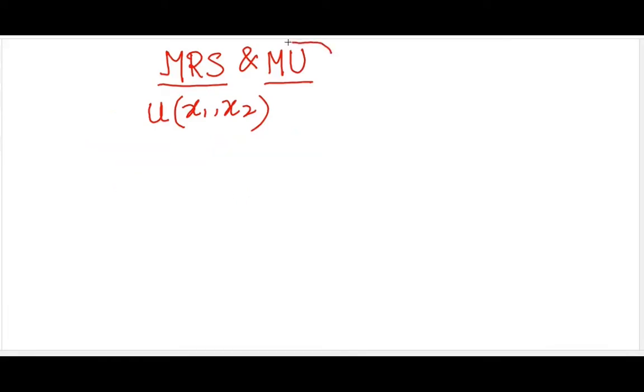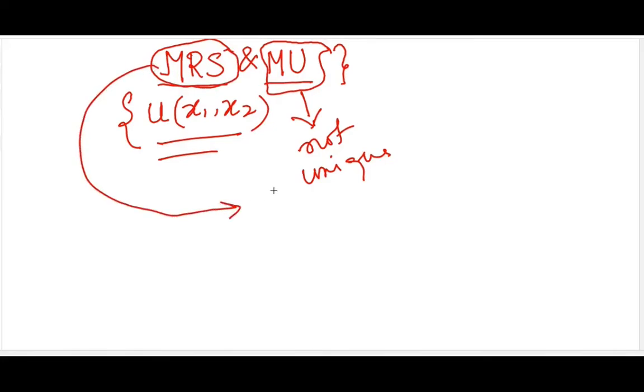And once again, I'll reiterate that marginal utility is not unique under monotonic transformation of the utility function. So I can say that for the same preference, I can have many utility functions and similarly many marginal utility values. MRS or marginal rate of substitution is unique. This is unique under any kind of monotonic transformation of my utility function.